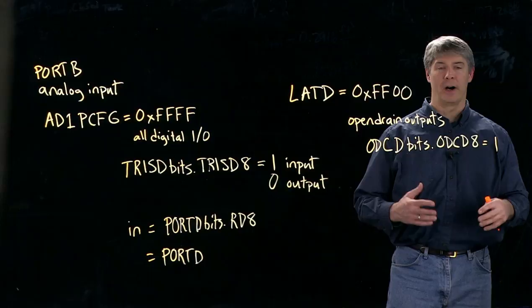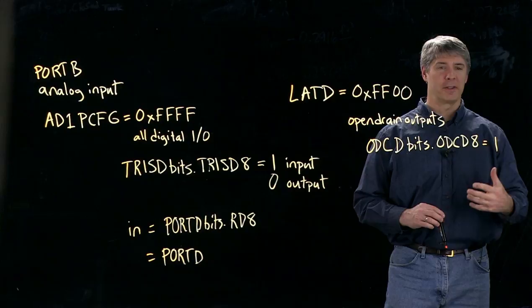And then if it's a 0, then it's a typical buffered output. So that's where the output is forced to be either 0 volts or 3.3 volts.